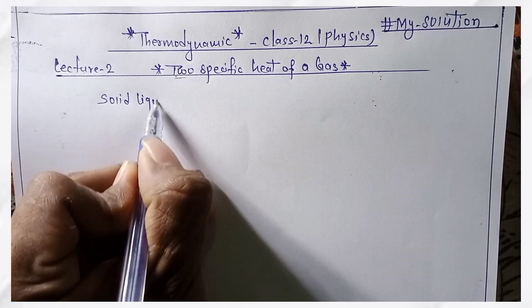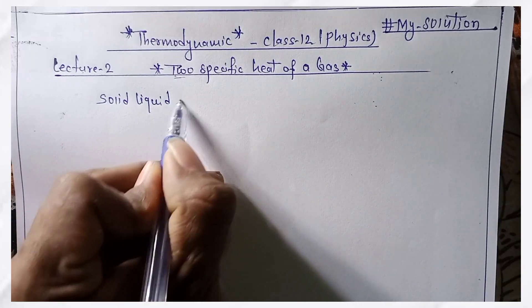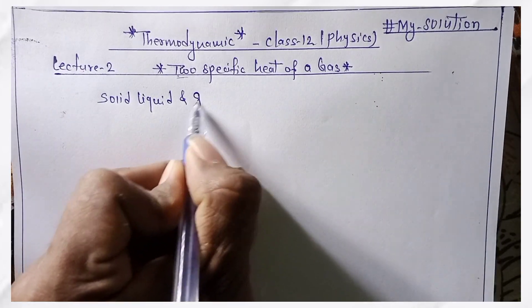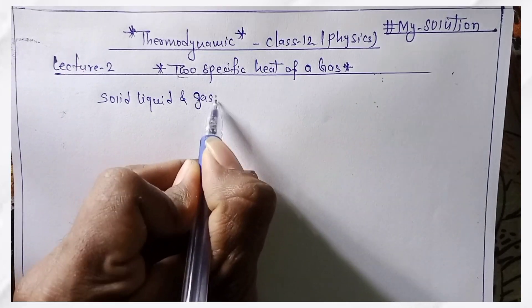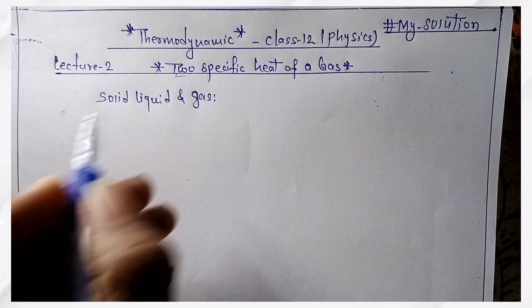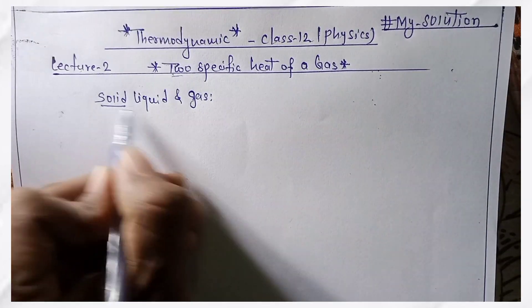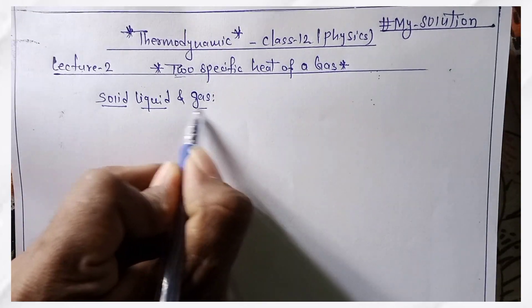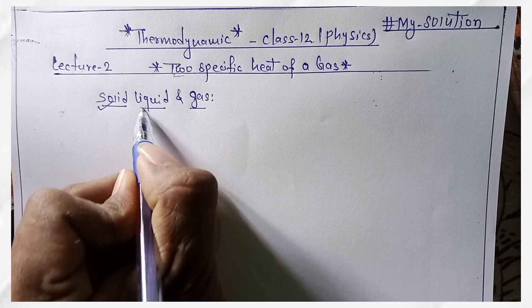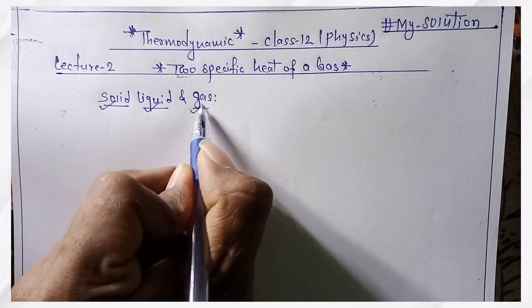There are three forms of matter: solid, liquid, and gas.